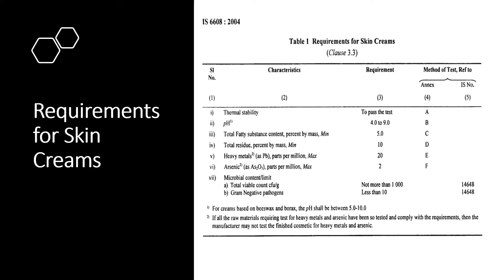For lead concentration, the maximum limit is 20 ppm, and for arsenic, the value should not exceed 2 ppm. For microbial content, the total viable count should not be more than 1000, and the presence of gram-negative pathogens in any cream should always be less than 10. These seven mandatory tests for skin creams specify requirements, assessment methods, and testing methodologies.